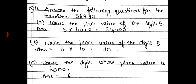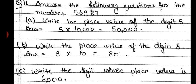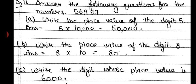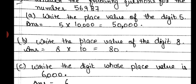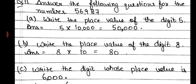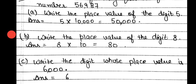The last question: answer the following for the number 56,987. First, the place value of digit 5 — 5 is on the 10,000 place, so we multiply 5 by 10,000 and get 50,000. Second, place value of digit 8 — 8 lies on the tens place, so we multiply by 10 and the answer is 80. Part C: write the digit whose place value is 6,000. The place value is given and we need the face value, which is 6. This was Exercise 1.1.